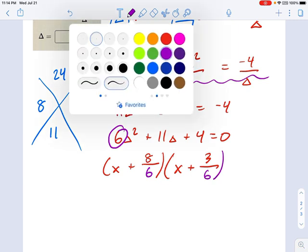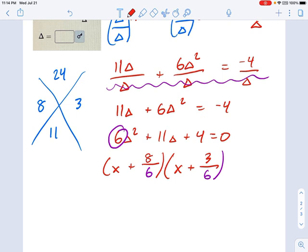And that whole thing, that's going to be my factored form. We're not quite done yet. I need to simplify this some more. This one simplifies to x plus 4 over 3. This one simplifies to x plus 1 over 2.